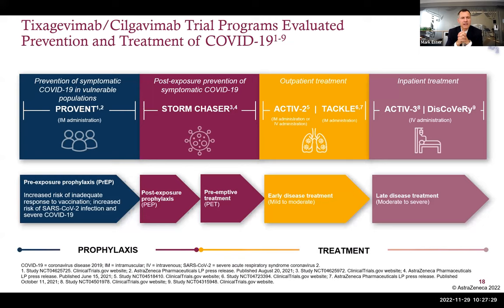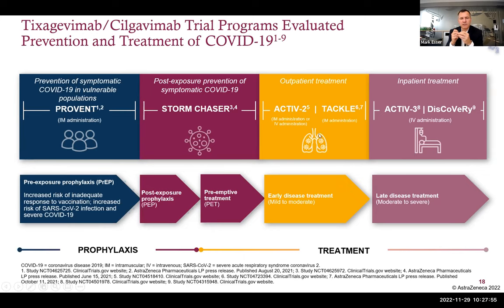We ran clinical studies across the full spectrum: the PROVENT prevention study on the left, a post-exposure prophylaxis study called STORM CHASER in the middle looking at both post-exposure prophylaxis and preemptive treatment, outpatient treatment studies — including the ACTIV-2 NIH study comparing IM versus IV and our internal TACKLE study with a single 600 mg IM dose — and two hospitalization studies, including ACTIV-3 with the NIH.